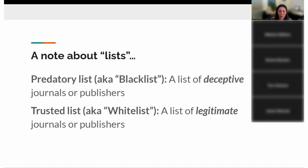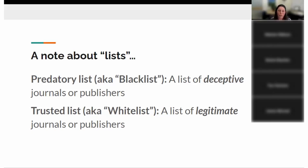The main thing people always ask me is: show me the list — a list of legitimate or illegitimate journals, a predatory list or whatever. Generally we say to try and avoid relying solely on predatory lists, sometimes called black lists. These are lists that people out there have considered to be predatory or deceptive journals. The opposite is a trusted list, sometimes called a white list. The Directory of Open Access Journals is an example of a trusted list — it's a legitimate list of journals and publishers you can trust because they've undergone a criteria check by the directory itself.